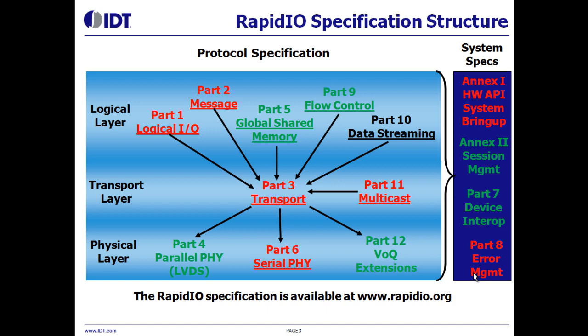The RapidIO specification is a layered specification consisting of a logical, transport, and physical layer. The logical layer defines read-write and messaging semantics for use by RapidIO components. The transport layer defines how RapidIO packets are routed through a RapidIO fabric, and the physical layer defines the electrical encoding and characteristics of RapidIO links. There are also a number of RapidIO specification parts that cut across the different layers. I'm going to talk about two of those today: the RapidIO system bring-up specification, and the Part 8 error management specification which defines fault-tolerance support.